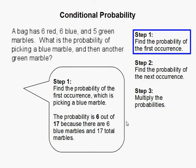Step 1: Find the probability of the first occurrence, which is picking a blue marble. The probability is 6 out of 17, since there are 6 blue marbles and 17 total marbles.